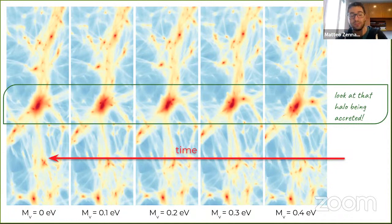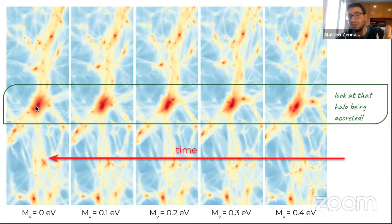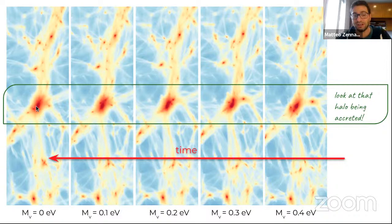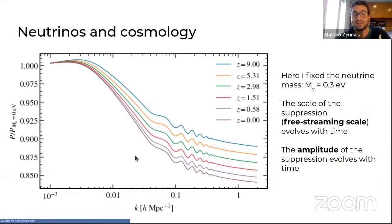This raises an interesting question: can you really distinguish simulations with different neutrino masses from the same simulation viewed at different times? For example, if the right panel is at higher redshift and the left at lower redshift, by eye it would be kind of difficult to tell the difference. Let's now start being a little more quantitative.